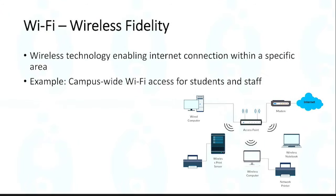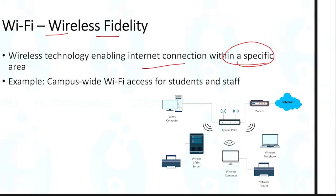Next is Wi-Fi. What is the full form of Wi-Fi? It is Wireless Fidelity. Wi-Fi is a wireless technology enabling internet connection within a specific area — that is the basic understanding. A university or college Wi-Fi allows accessibility to study material from the internet.